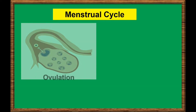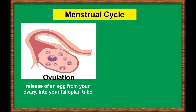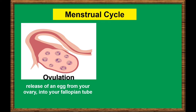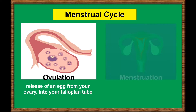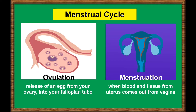Ovulation is part of the menstrual cycle, which occurs each month in a sexually mature female. Another part of the menstrual cycle is menstruation. Menstruation is the process in which blood and other tissues are shed from the uterus and leave the body through the vagina.